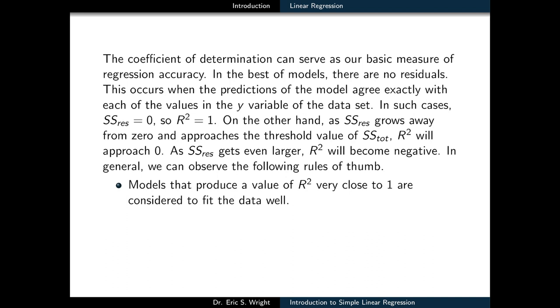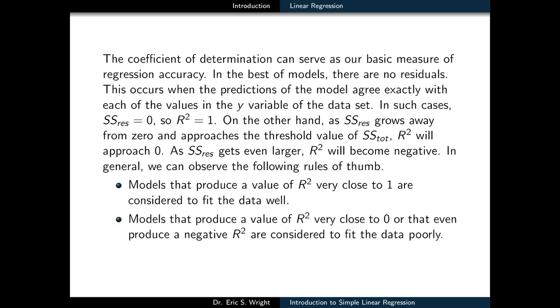In general, we can observe the following rules of thumb. Models that produce a value of R squared which is very close to one are considered to fit the data well. Models that produce a value of R squared very close to zero, or that even produce a negative R squared, are considered to fit the data poorly.